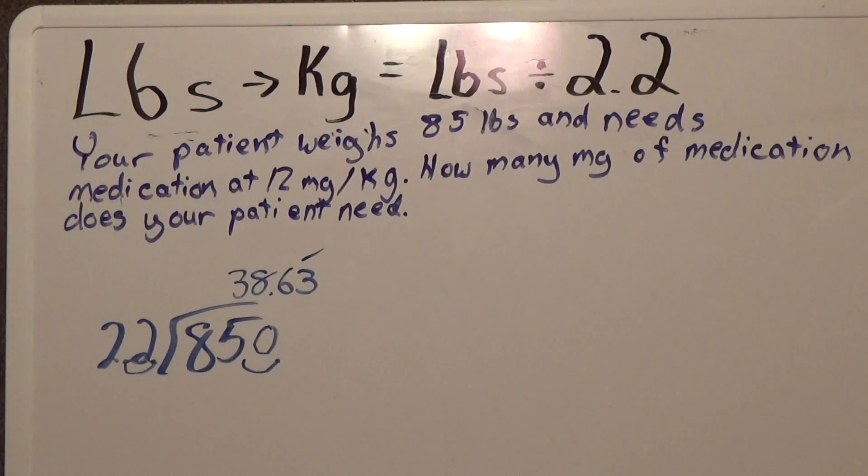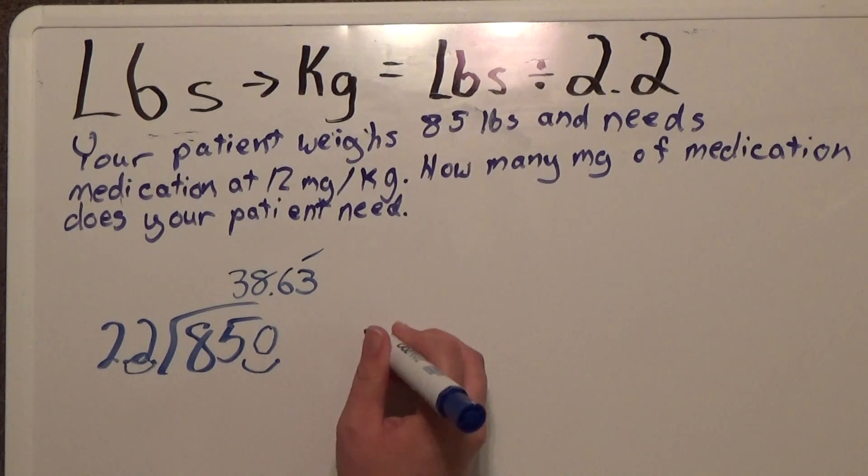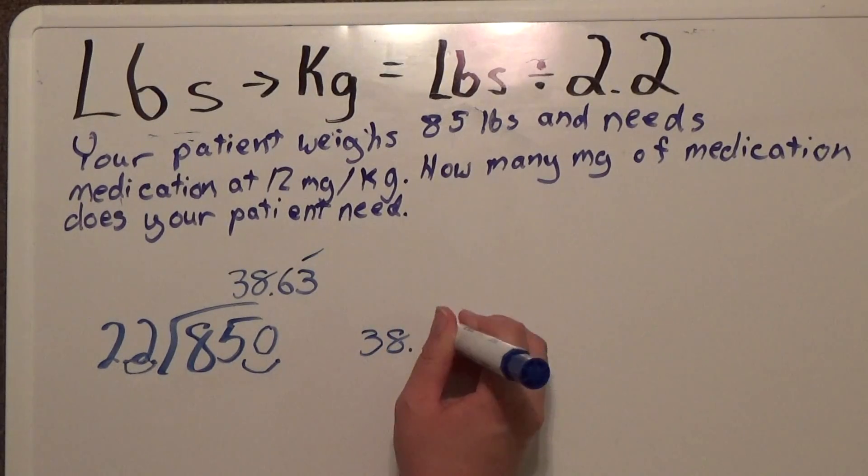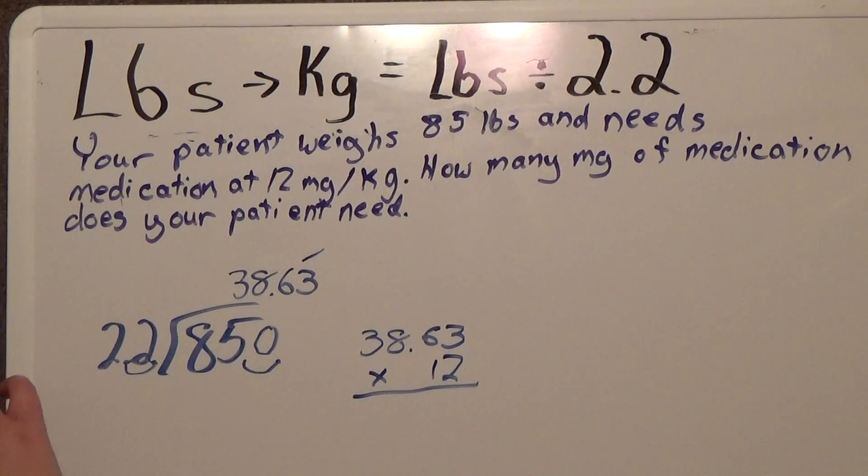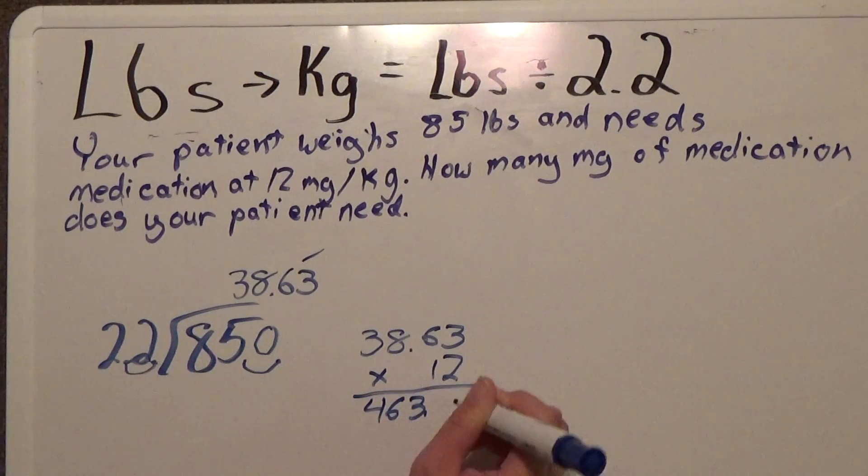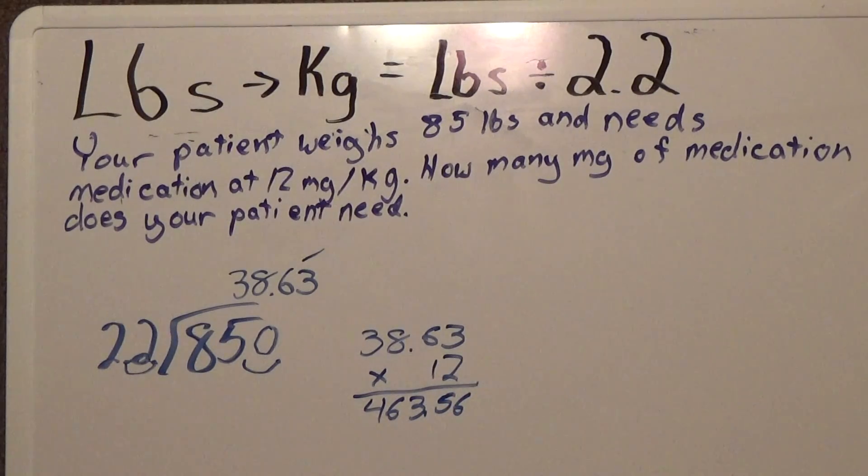Now we need to figure out how much medication or how many milligrams the patient needs. So we take 38.63 and multiply that by 12. 463.56 milligrams.